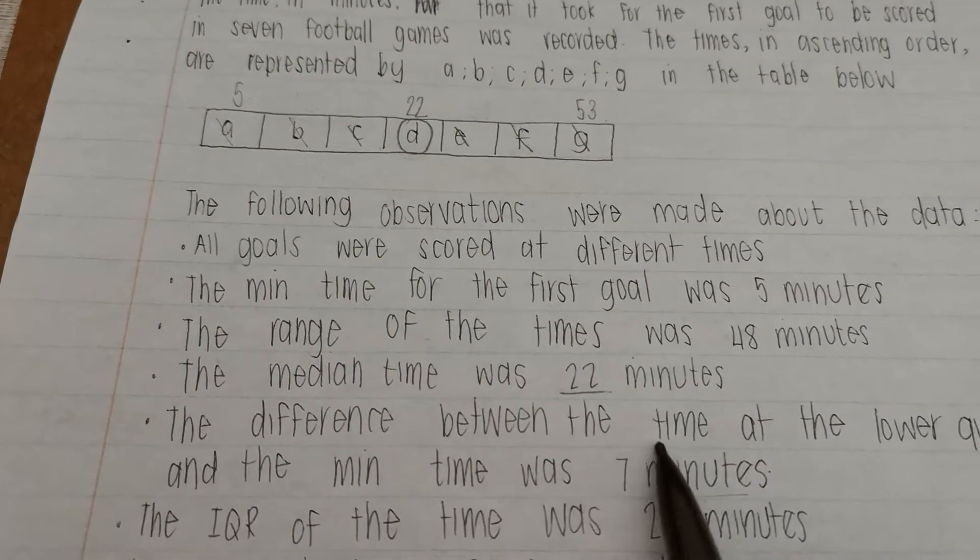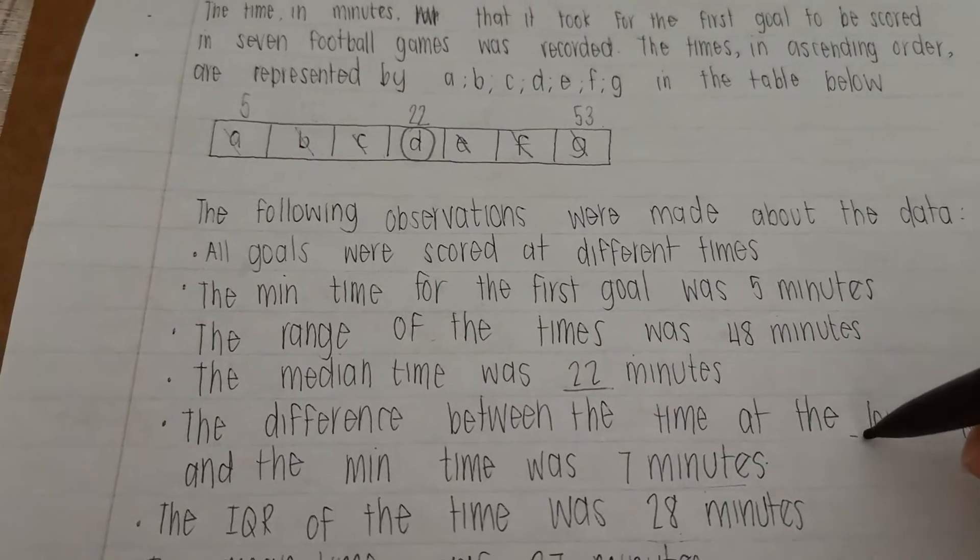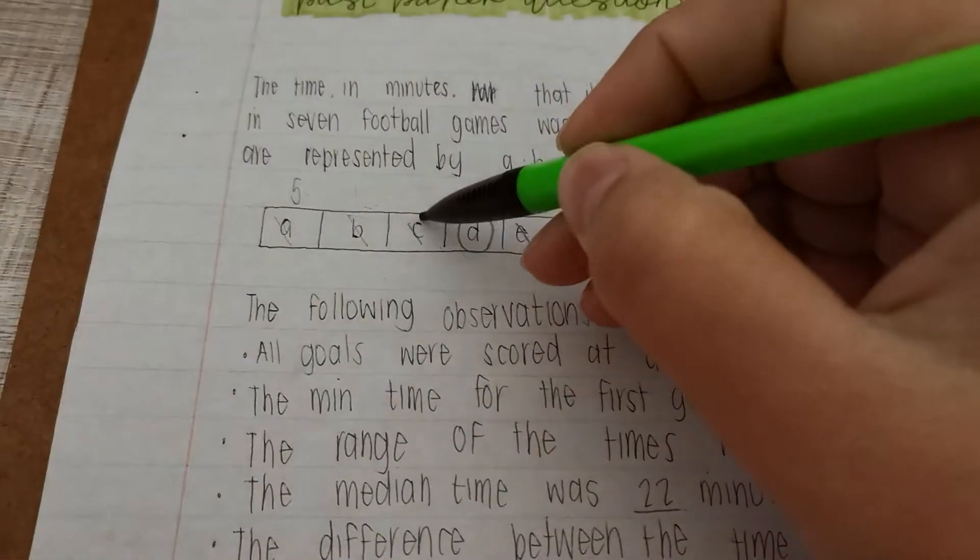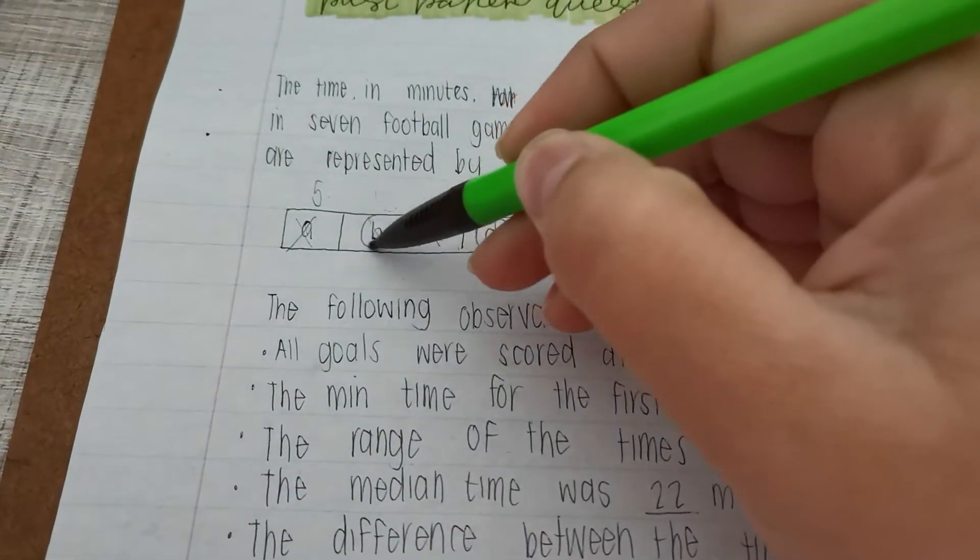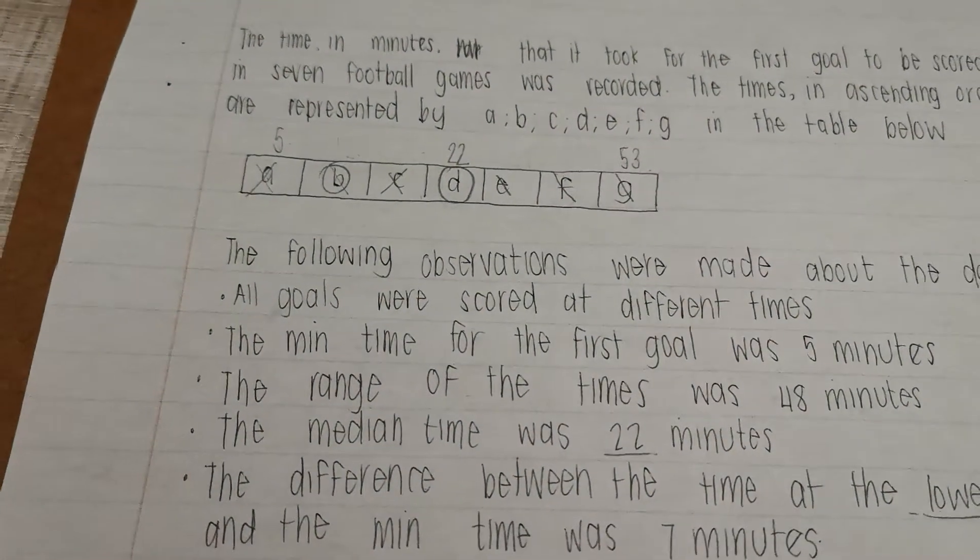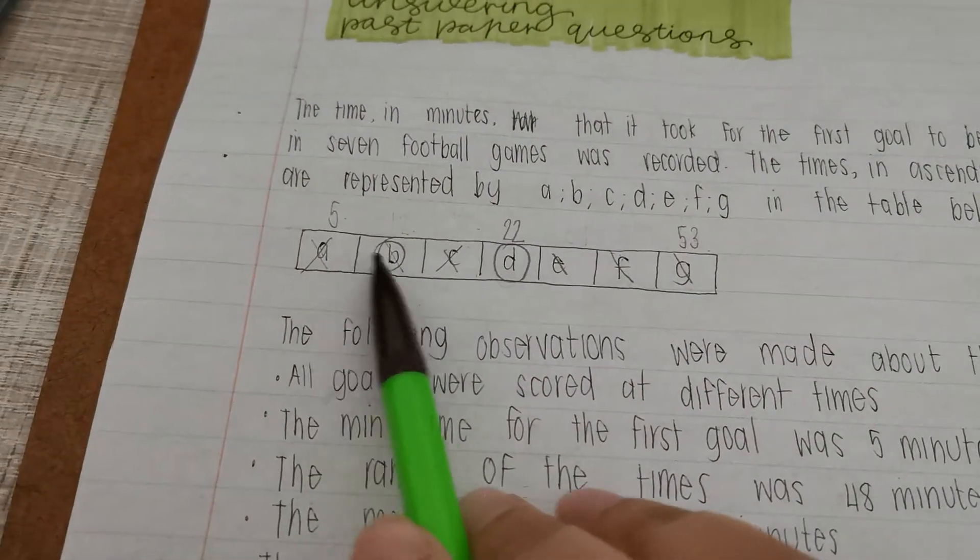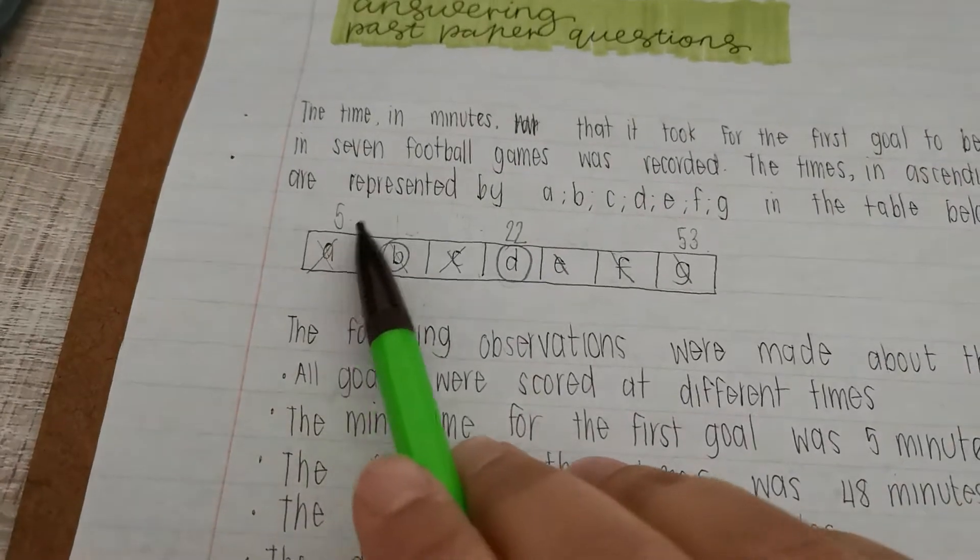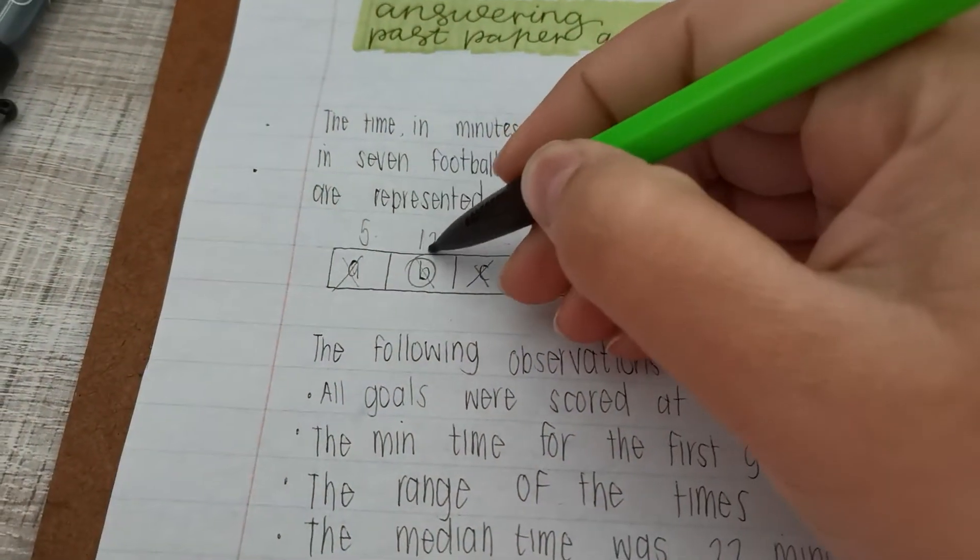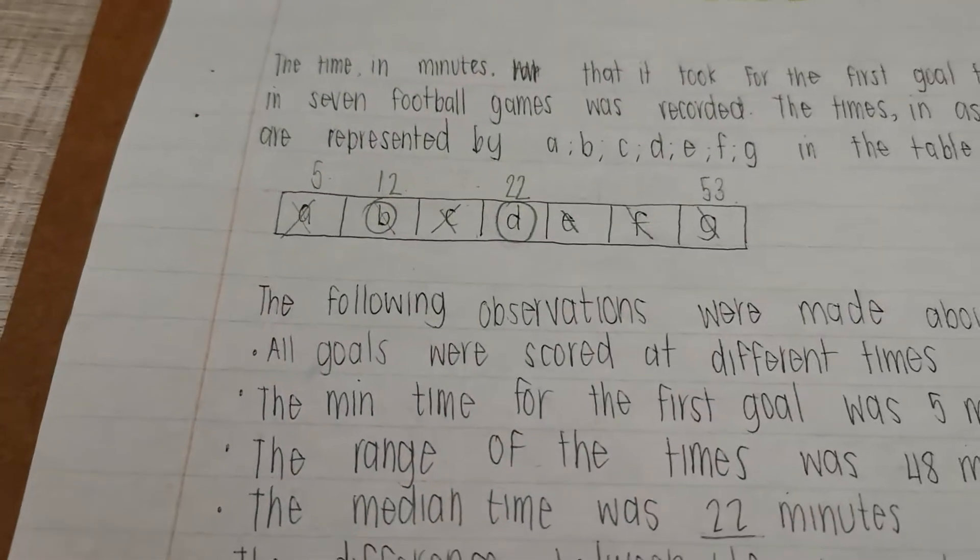It says the difference between the time at the lower quartile... let's find the lower quartile, block out, block out, here's our lower quartile, and the minimum are 7 minutes. So that means from here to here are 7 minutes. So we're going to add 5 plus 7 to get this one here of 12.